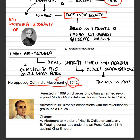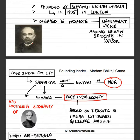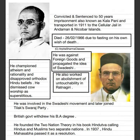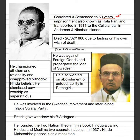He was arrested in 1910 for his connections with the revolutionary group India House. In all these charges he was convicted and sentenced to 50 years imprisonment — what we call 'Kala Pani' — in Andaman and Nicobar Islands. There was a small black prison there with only a tiny window at the top. Without adequate food and water, a person was arrested in complete darkness — he didn't even know whether it was day or night.